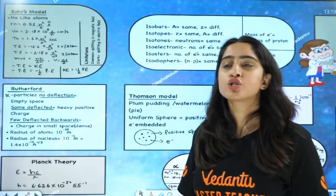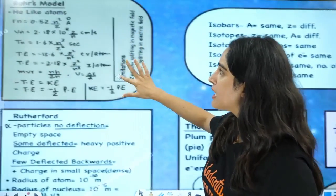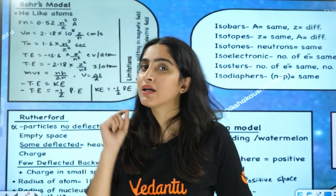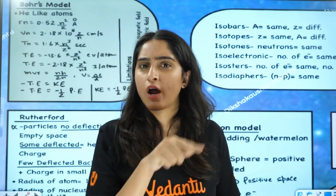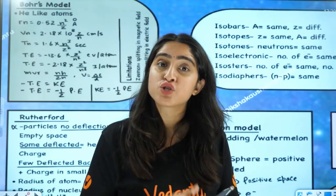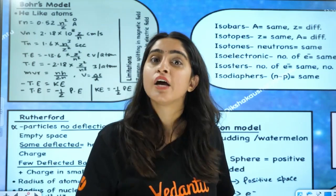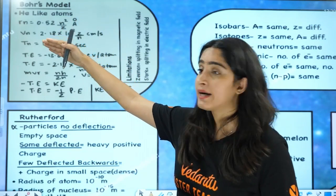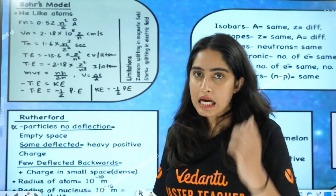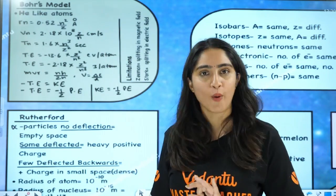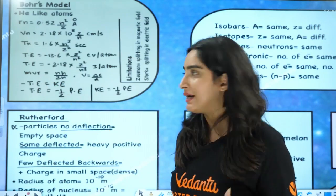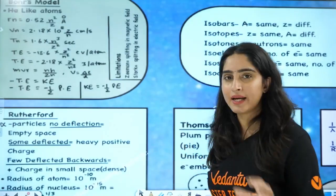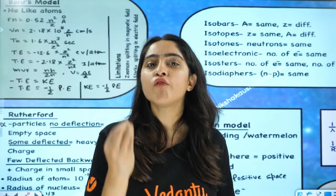Next, we have the Bohr model. Bohr model has several formulas. The Rutherford model failed because of Maxwell's theory — it cannot predict the stability of the atom. Bohr model suggested that there are orbits which have fixed energy and fixed radius, and electrons live in that orbit with that energy. The formulas cover radius, velocity, time period, total energy, kinetic energy, and potential energy, where N is the orbit number and Z is the atomic number. Angular momentum MVR equals NH by 2π, and frequency equals ΔE by H. The limitation of the Bohr model includes the Zeeman effect — splitting of lines in a magnetic field — and the Stark effect — splitting of lines in an electric field.